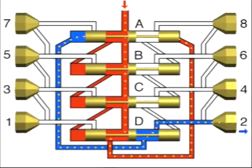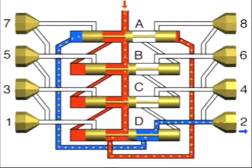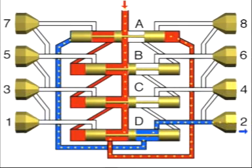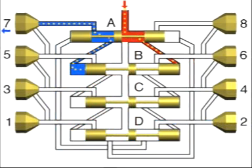The lubricant enters the metering device from above and flows to the right-hand end of piston A. Piston A is moved to the left under the pressure of the lubricant, causing the lubricant ahead of the left-hand end of piston A to be dispensed to outlet 2. Once piston A has reached its left-hand final position, the junction channel to the right-hand end of piston B is opened.